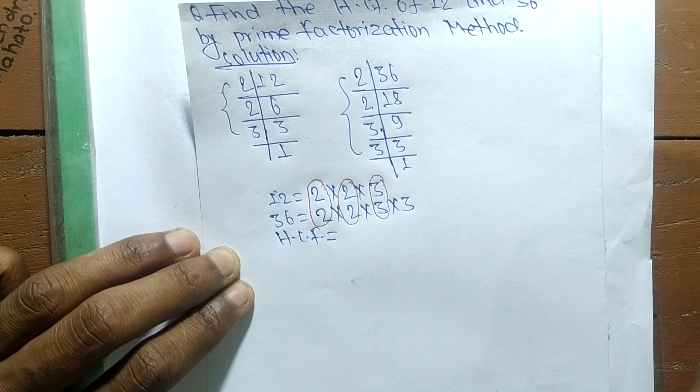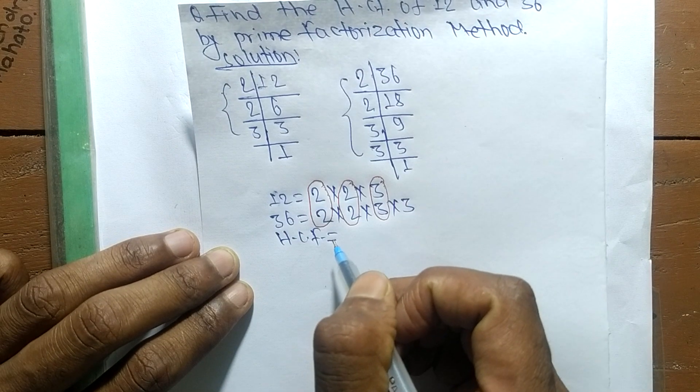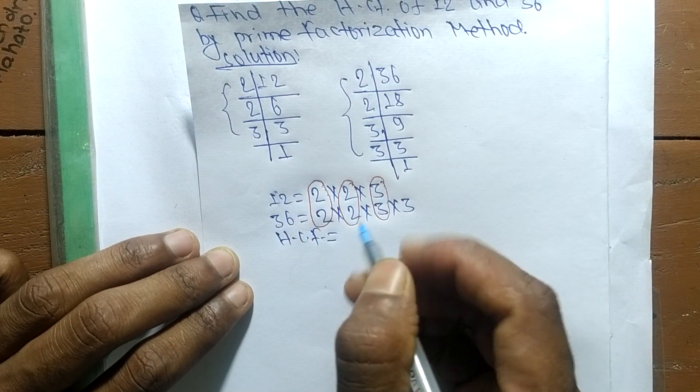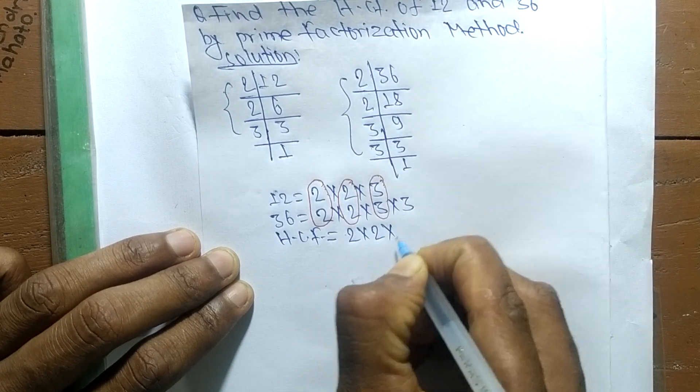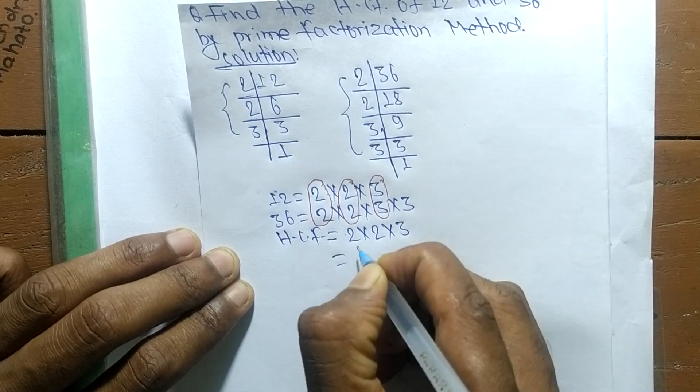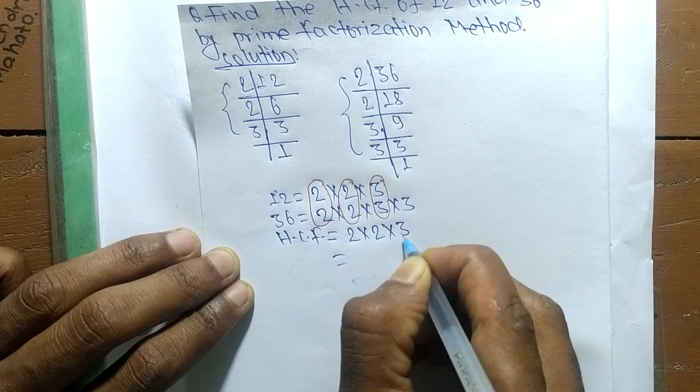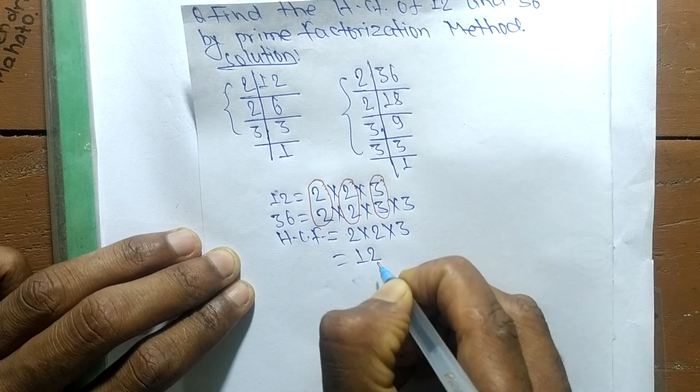HCF is the product of all the common factors. The common factors here are 2 times 2 times 3. So it is 2 times 2 equals 4, and 4 times 3 equals 12.